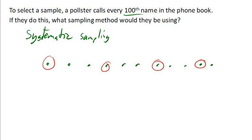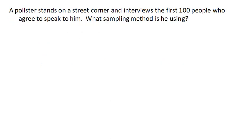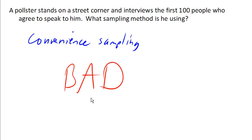So suppose a pollster is standing on a street corner and just interviews the first hundred people who happen to walk by and talk to him. This is a sampling method called convenience sampling. Because they're choosing whoever's convenient. This is bad sampling. There's absolutely no guarantee that the people that are selected are anywhere representative of the population. And convenience sampling like this should be avoided at all costs.